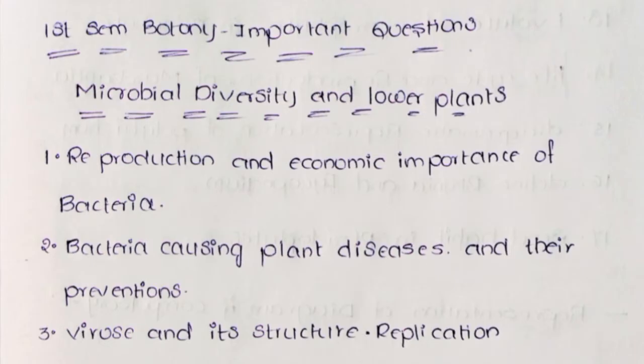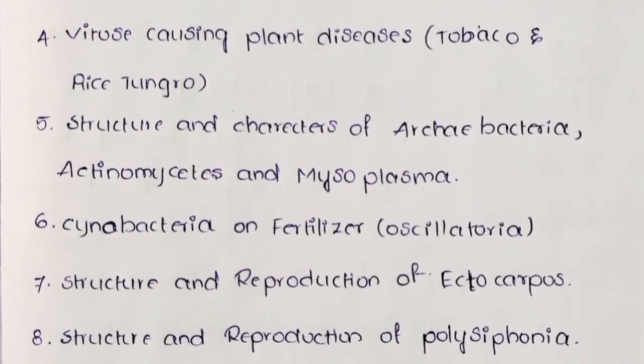First: Reproduction and Economic Importance of Bacteria. Second: Bacteria Causing Plant Diseases and their Preventions. Third: Virus and its Structure and Replication. Fourth: Virus Causing Plant Diseases — Tobacco and Rice Tungro.